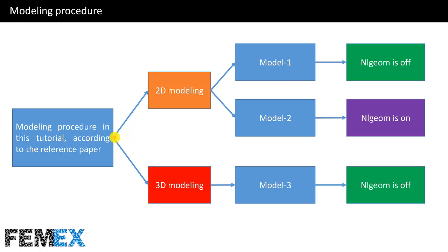Now I want to talk about the modeling procedure in this tutorial according to the reference paper. We have two kinds of models: 2D models and a 3D model. We have two 2D models — model 1 and model 2. In model 1, NLGEOM is off and in model 2 it is set to on. We have one 3D model and NLGEOM is off in the 3D model. The rest of the models will be covered in the complete version of this tutorial.